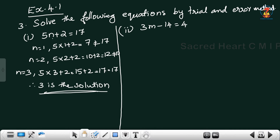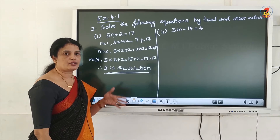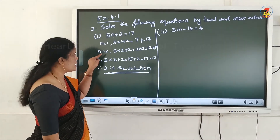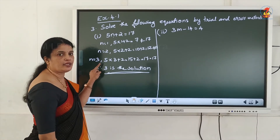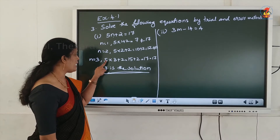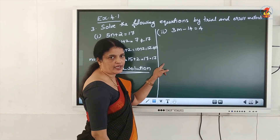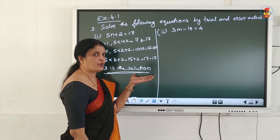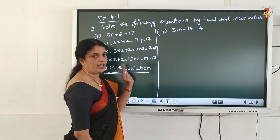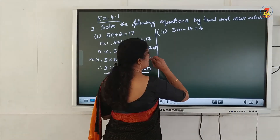In the trial and error method, you can substitute any values — 1, 2, 3, 10, negative 1, negative 2, 0 — in place of n. When n = 3, the LHS becomes 5×3 + 2 = 17, which equals the RHS. So LHS = RHS, meaning n = 3 is the solution of this equation.